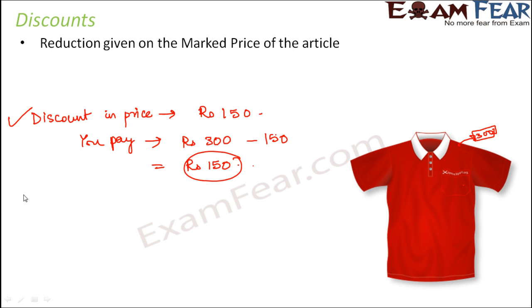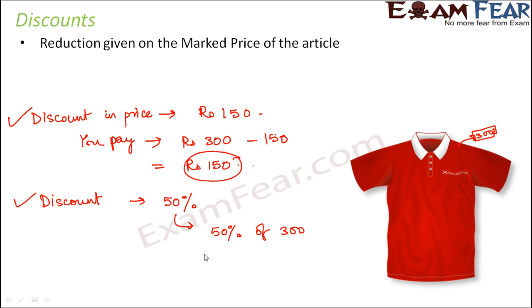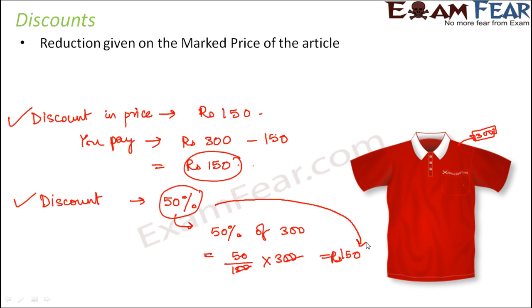There is an alternative way to express discount — you can express it in percentage. Instead of saying there was a discount of rupees 150, you can say there was a discount of 50% on this t-shirt. That means 50% of the marked price is the discount: 50% of 300 = 50/100 × 300 = 150 rupees.